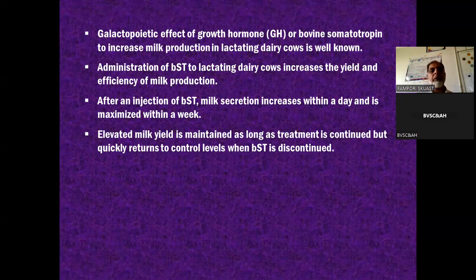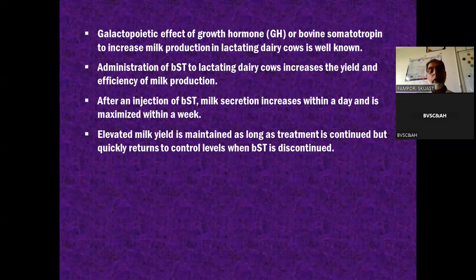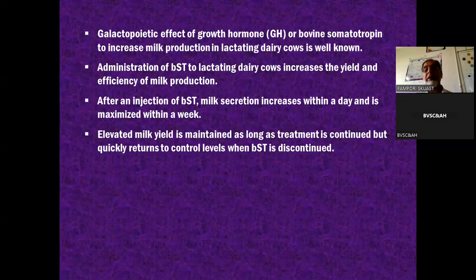The galactopoietic effect of growth hormone or bovine somatotropin (BST) is to increase milk production in lactating dairy cows. Growth hormone is very important for the galactopoietic effect or maintenance of lactation. After injection of recombinant BST, milk secretion increases within a day and is maximized within a week. Elevated milk yield is maintained as long as treatment is continued but quickly returns to control levels when BST is discontinued, confirming growth hormone's importance in galactopoiesis.